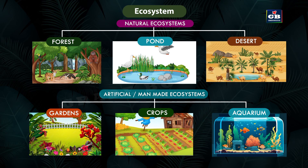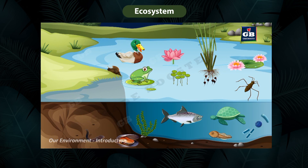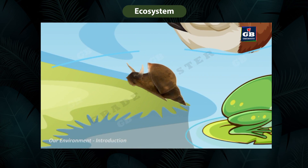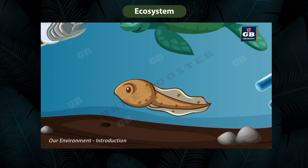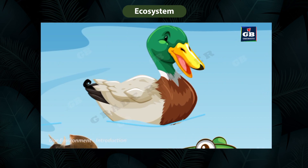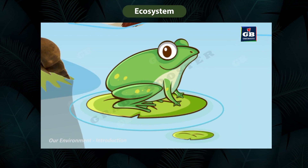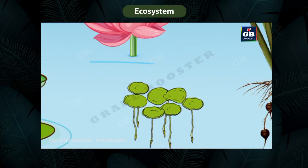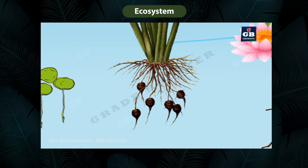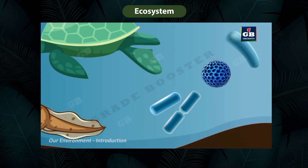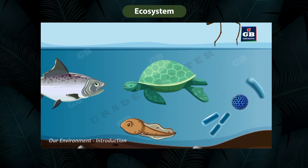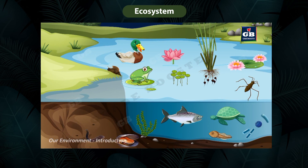Let us look at the components of a natural ecosystem — a pond. If we observe a pond ecosystem we can find animals like pond snail, pond skater, tadpole, turtle, duck, marshals, leech, fish, and frog; plants like water lily, lotus, duckweed, and water chestnut; and microorganisms like bacteria and protozoa. These are the biotic components of the pond ecosystem.